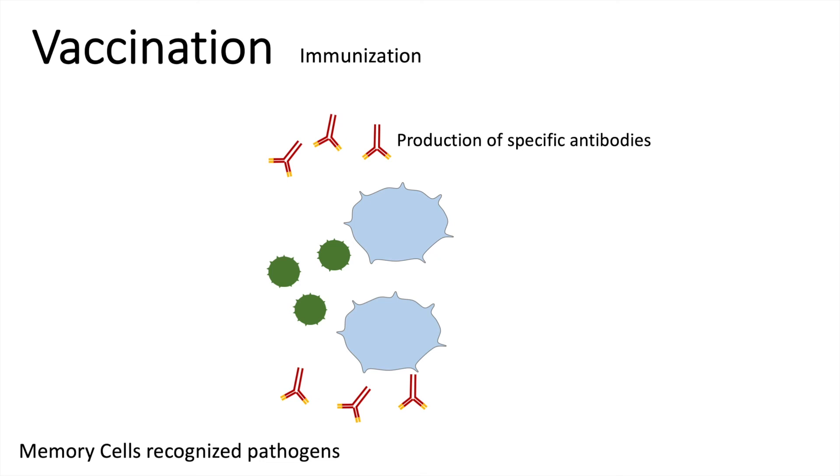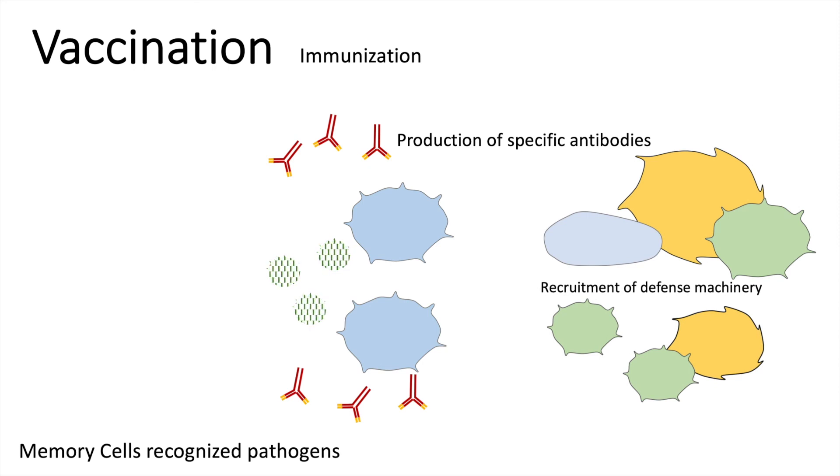Further, they can recruit a whole defense machinery consisting of different types of cells which will eliminate these pathogens. Because of the memory cells acting so rapidly, in most cases the patient doesn't even know he got infected. The adaptive immune system in most cases deals easily with the pathogen and gets rid of it.